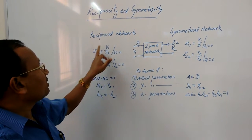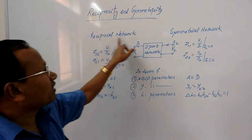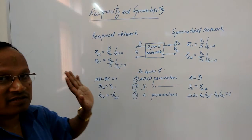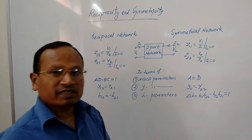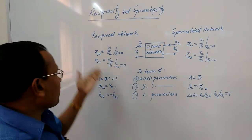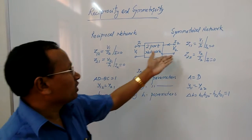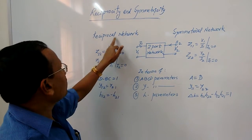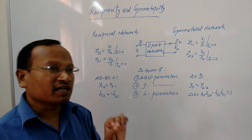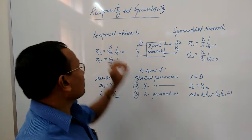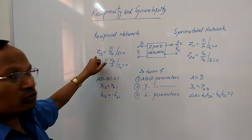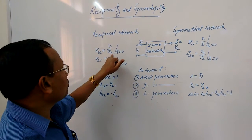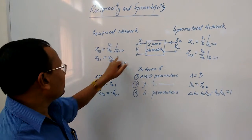If we try to write the conditions for a reciprocal network and symmetrical network in terms of Z parameters — we know the Z parameters: Z11, Z12, Z21. Let us understand the condition for a reciprocal network. Z12 is defined as V1 upon I2 with I1 equal to 0.